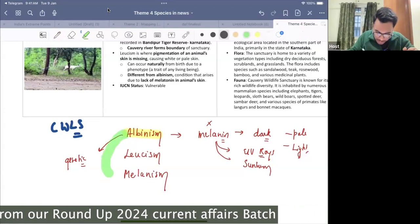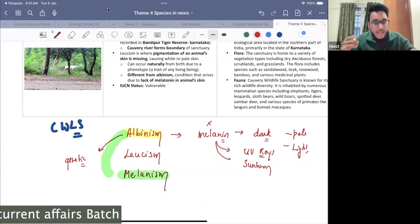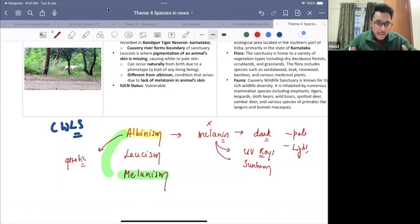Then the next, the opposite of albinism is melanism. It is the opposite of albinism. Now what happens in melanism? Here, there will be excess melanin that will be produced.